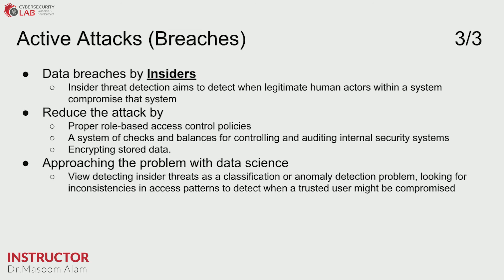There can also be breaches by insiders, which can be mitigated with role-based access control. When solving this problem with data science, insider threats are viewed as a classification or anomaly detection problem. We look for inconsistencies in access patterns to detect when a trusted user might be compromised.